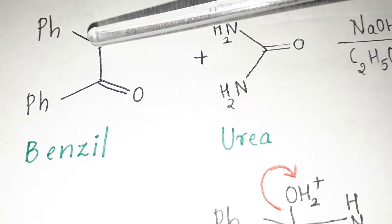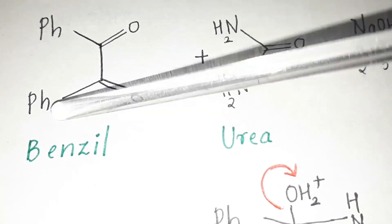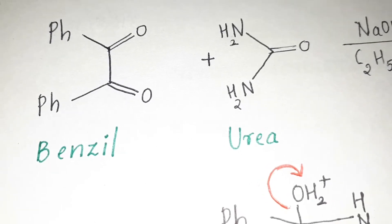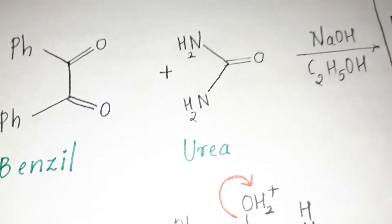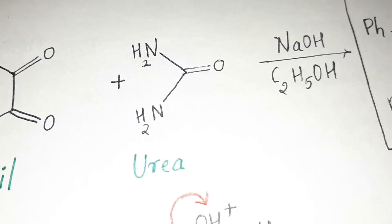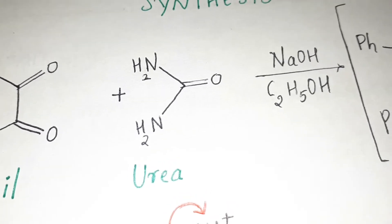The benzyl has C=O, C=O, and two phenyl groups attached to the carbon atoms. Urea is NH2, NH2, C=O. They both combine together in the presence of NaOH and C2H5OH (ethanol) to form an intermediate.